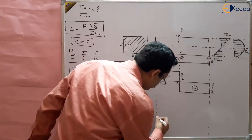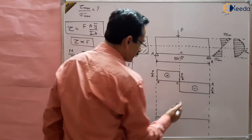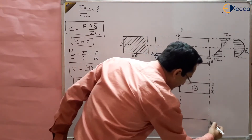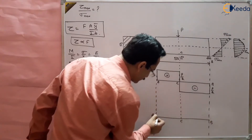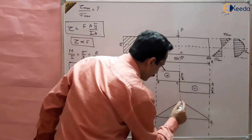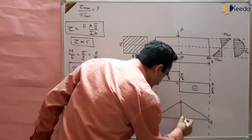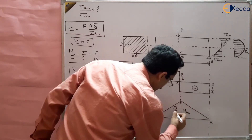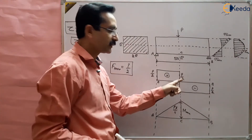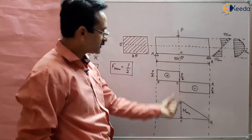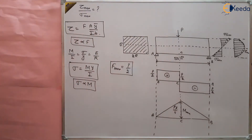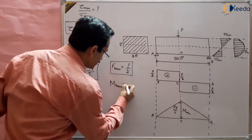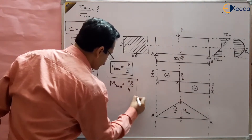For the bending moment diagram, there is linear variation from A to C and then from C to B — from 0 to maximum and then back to 0. The maximum bending moment is at the center point C, and its magnitude is M_max = PL/4.